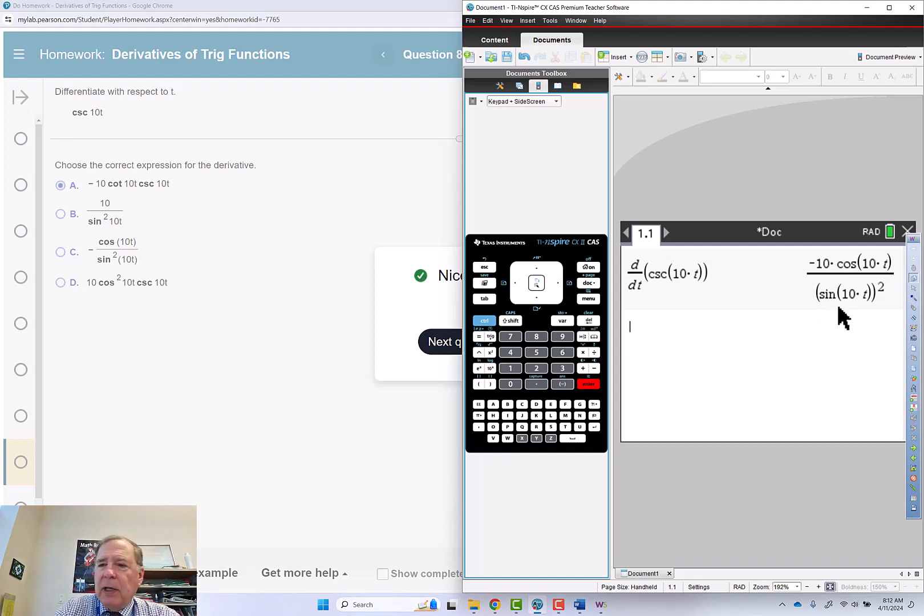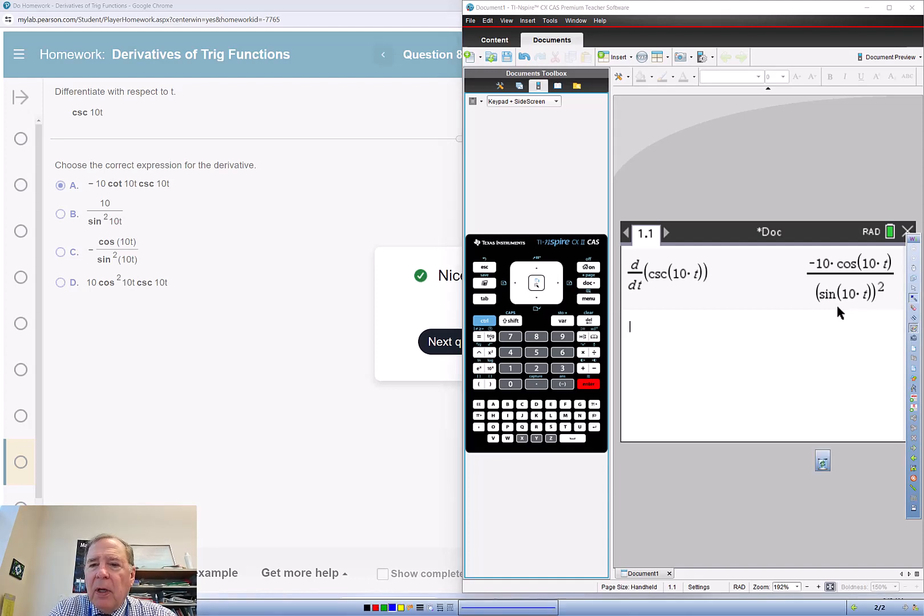So if we write this down, negative 10, and I'm going to write this as times 1 over sine 10t times cosine of 10t divided by sine of 10t. So this is cotangent 10t.